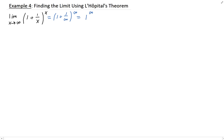So 1 to the infinity is not equal to 1 — this is actually an indeterminate result. Therefore we can go ahead and apply L'Hôpital's rule. But since we have x in the exponent, what we want to do is use the natural log to bring down the x. We can't just take the natural log of this limit — that would be changing the problem.